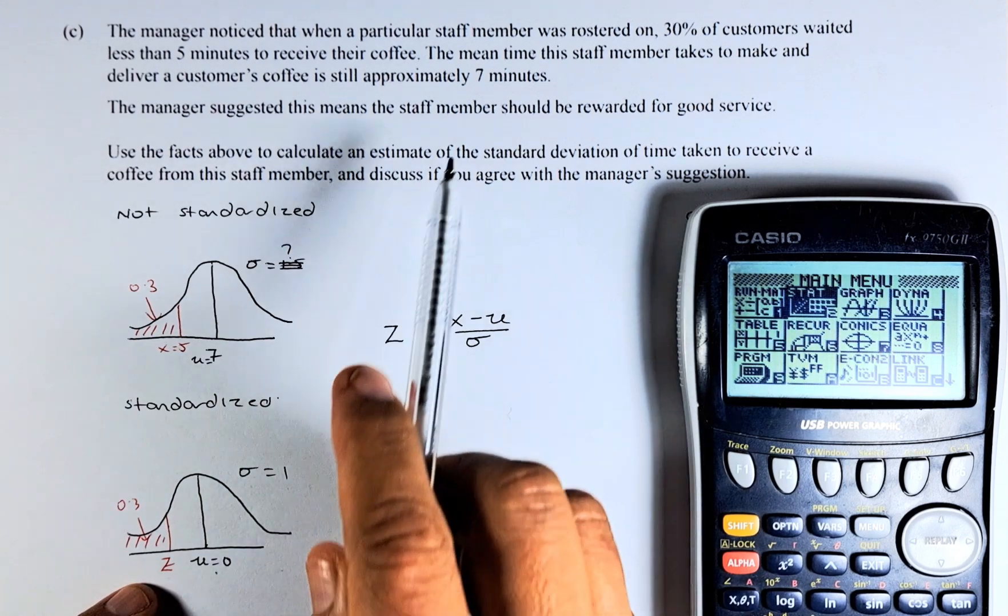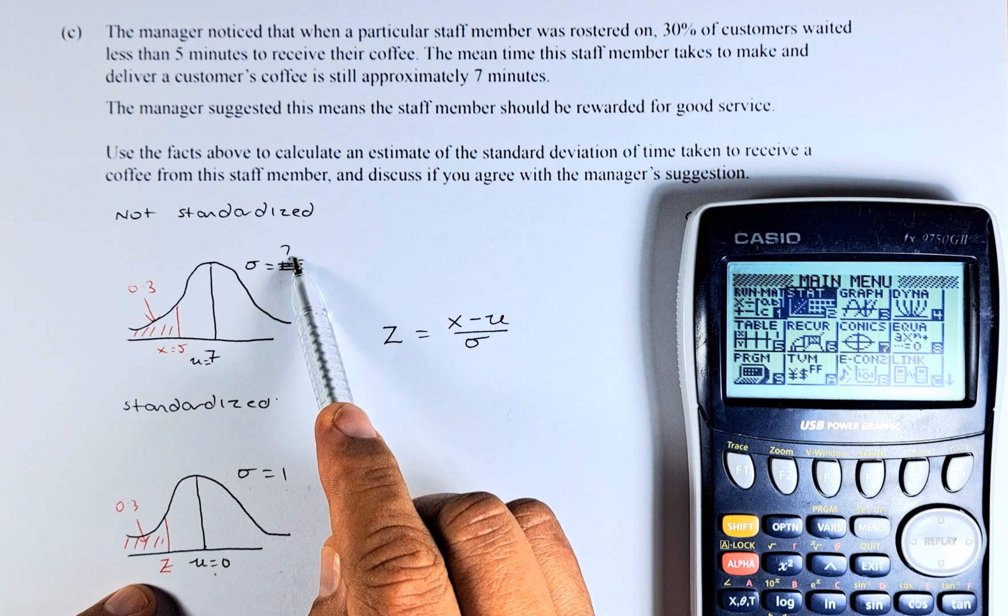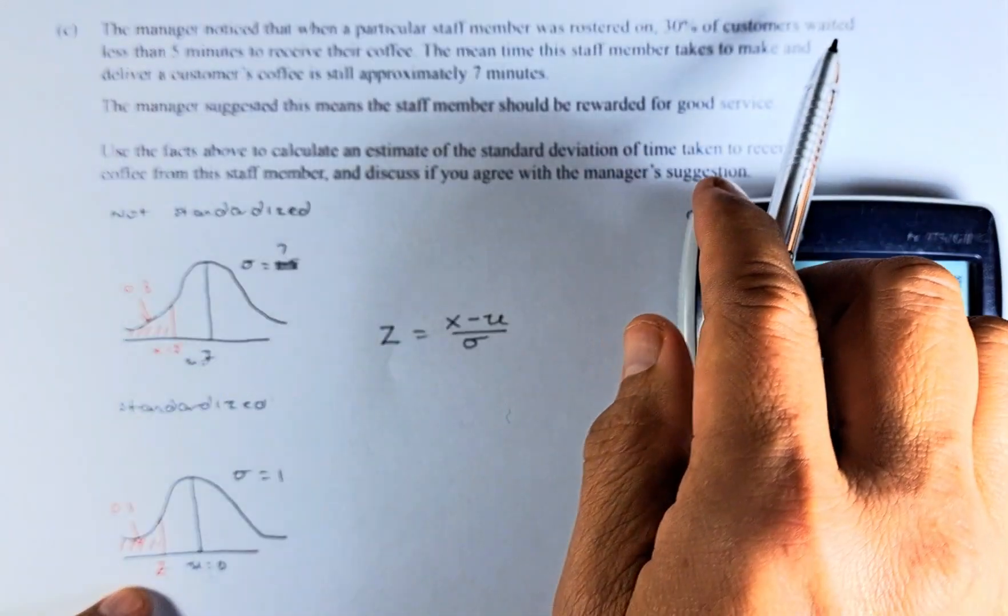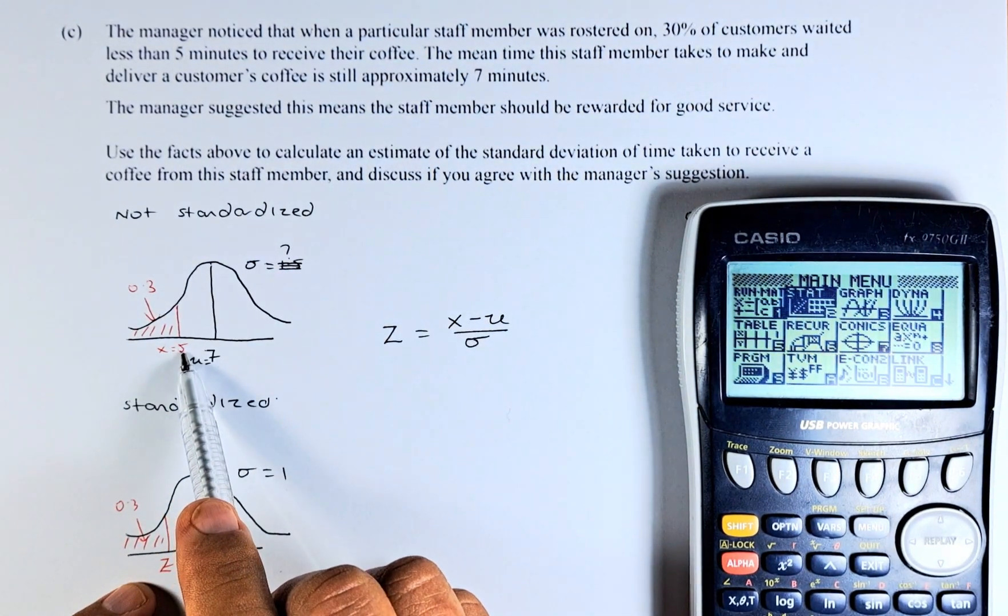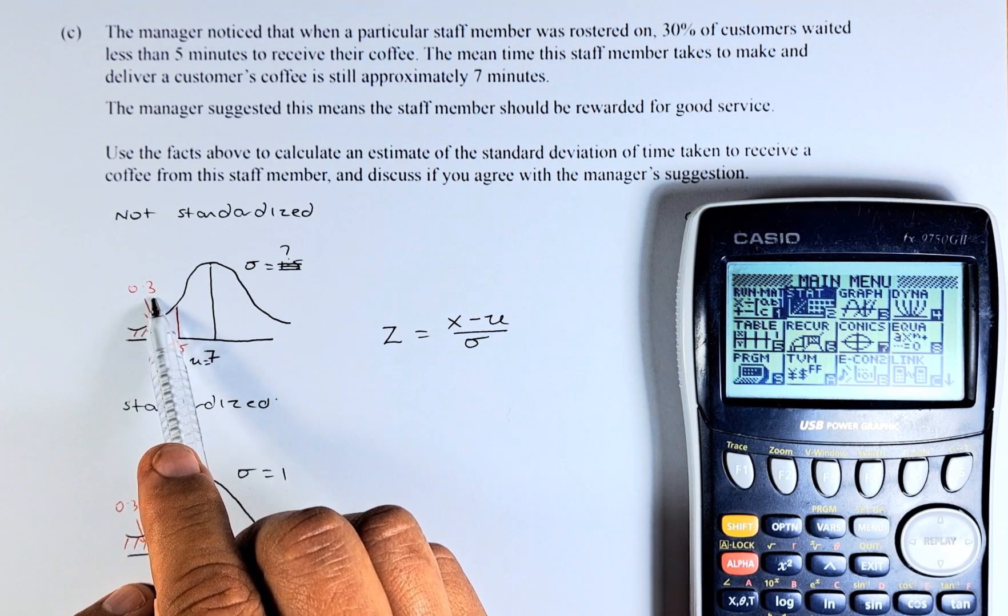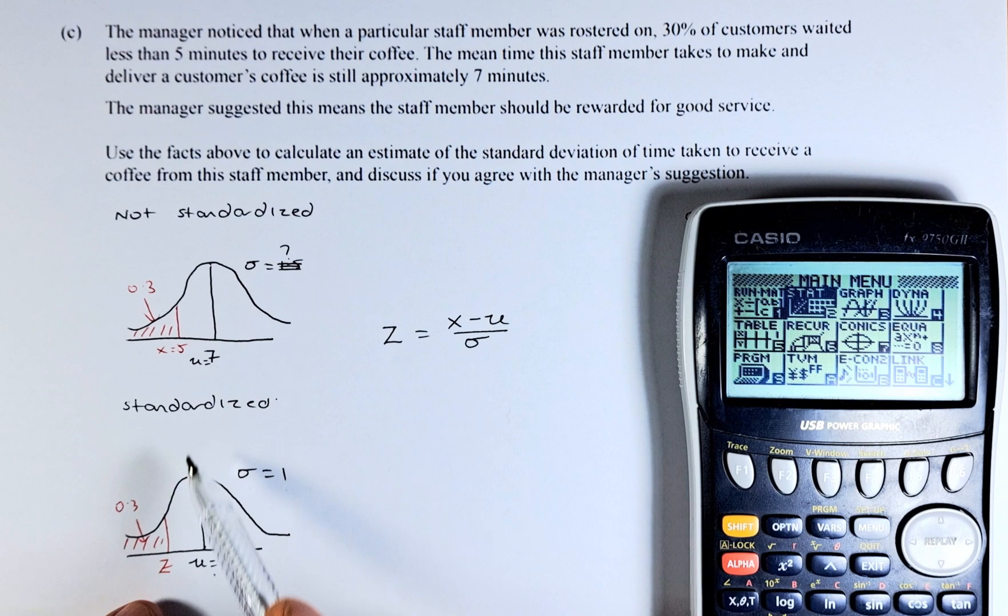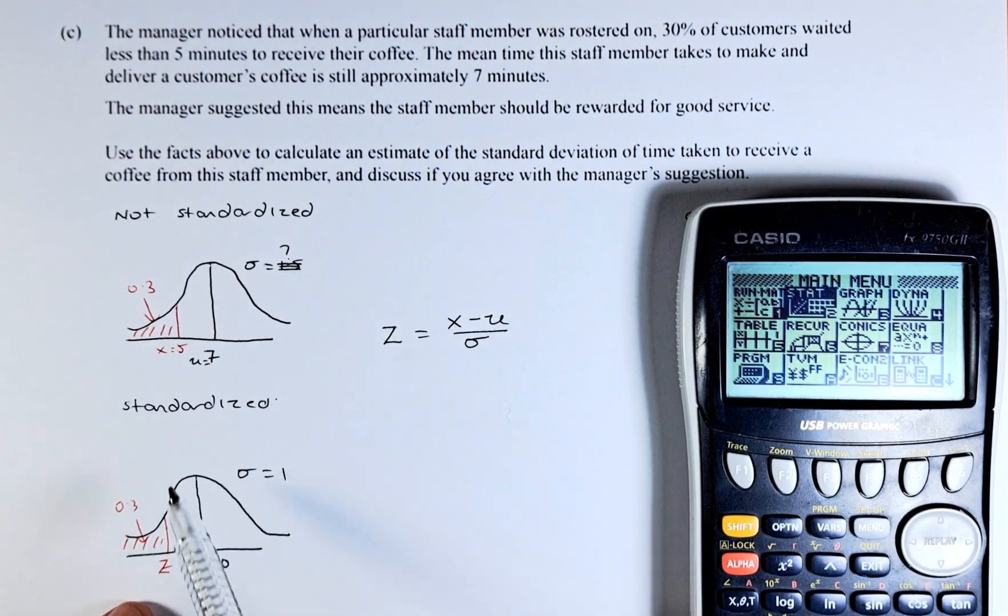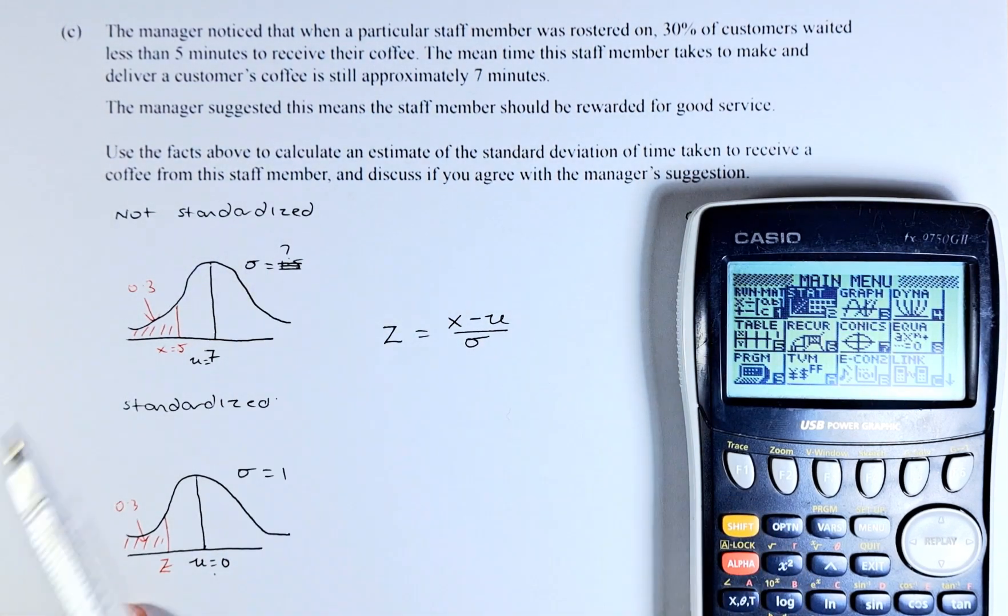So let's read the question. The mean is still 7, the non-standardized standard deviation is what we are going to find. And they said that 30% waited less than 5 minutes to receive their coffee. So anything less than 5 is going to be 30% or 0.3. So we transfer them into the standardized version, the same thing. Calculate Z. So we are working on the standardized version to calculate the value for sigma in the non-standardized version.